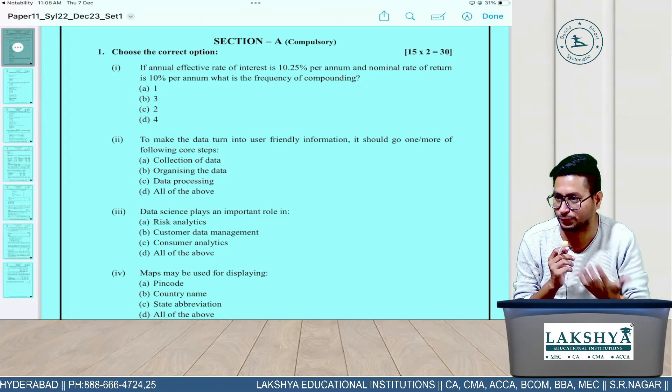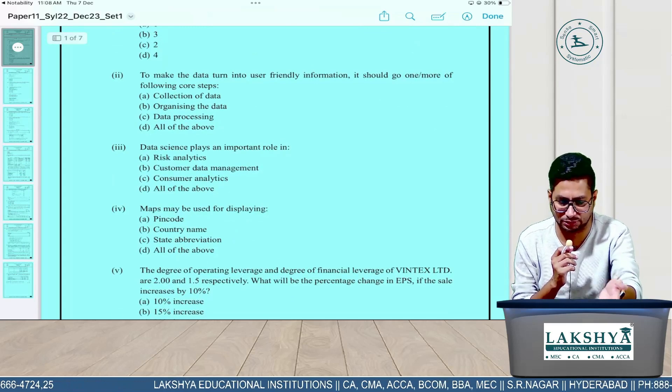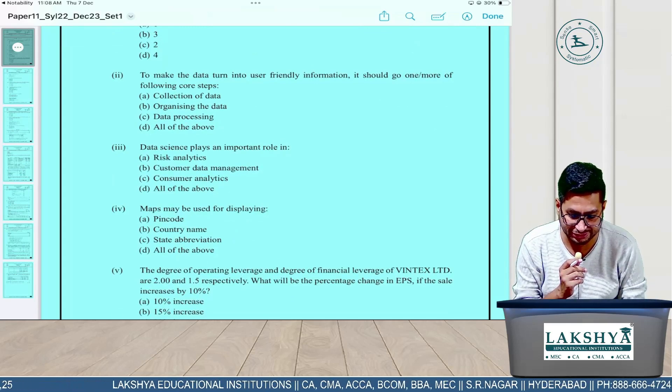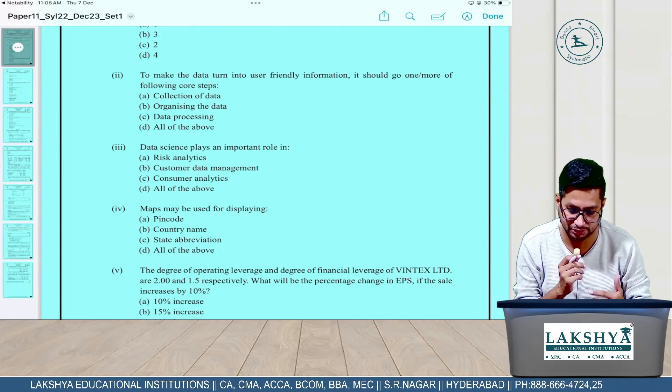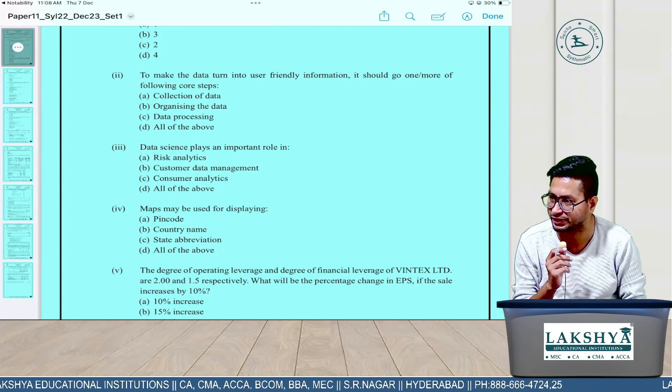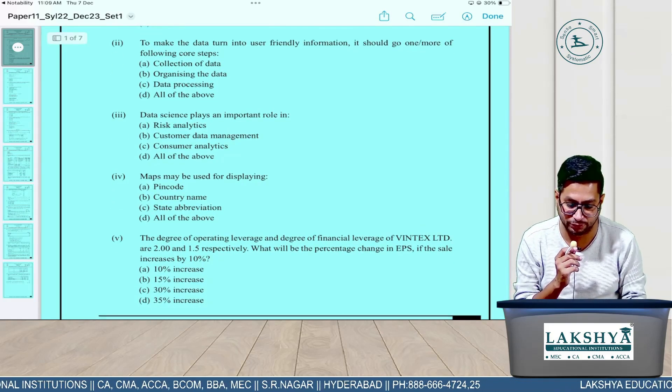Data science plays an important role in risk analytics, customer data management, consumer - all the subheadings are explained in detail. Answer will be all of the above. Maps may be used for displaying what? Pin code, country, state also. Answer will be all of the above.